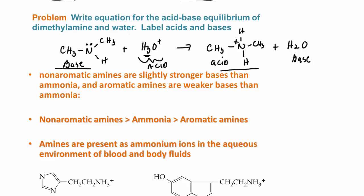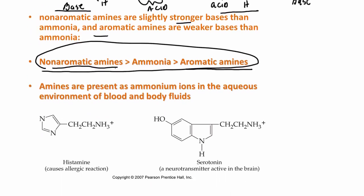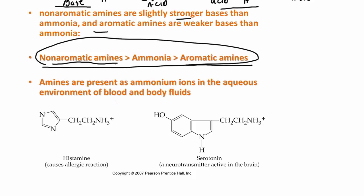It turns out that non-aromatic amines are slightly stronger bases than ammonia, and aromatic amines are weaker bases than ammonia. So the order is: non-aromatic amines are the stronger bases, then comes ammonia, and aromatic amines are the weaker bases. If you're asked which amine is the stronger base, the non-aromatic amine is the stronger base. Amines are present as ammonium ions in body fluids because blood and body fluids are aqueous. For example, histamine and serotonin — a neurotransmitter found in the brain — are amines that exist as ammonium ions in body fluids.